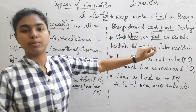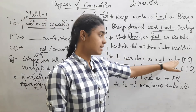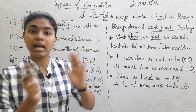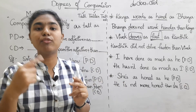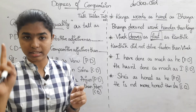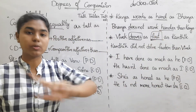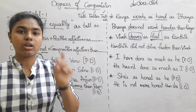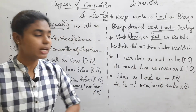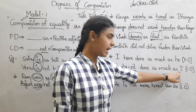If you focus on the main points, here is the next example: I have done as much as he. When we transform this sentence, we get: He has not done as much as I. Very simple.